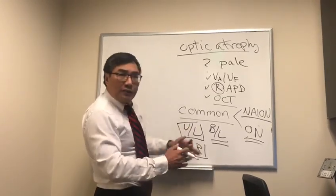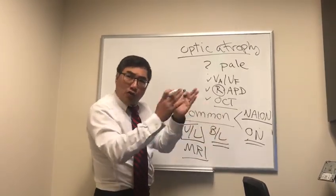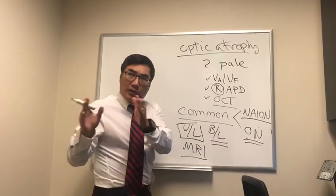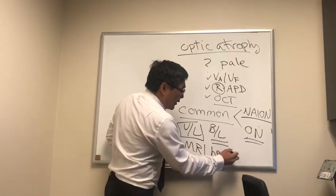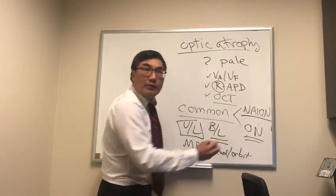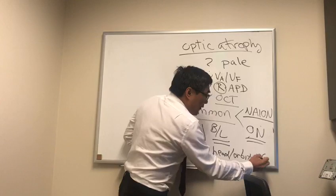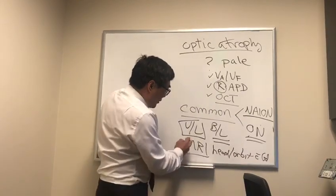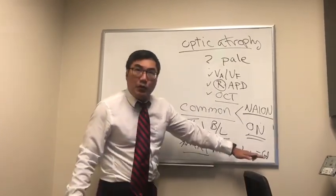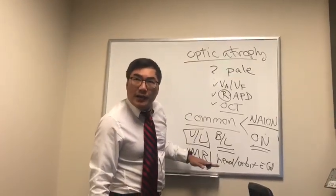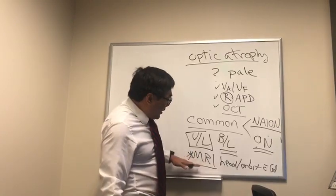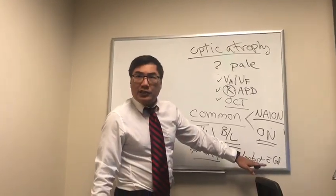Because the optic nerve has an intraocular portion, an intraorbital portion, an intracanalicular portion, and an intracranial portion, we need to have MRI of head and orbit with gadolinium and fat suppression sequences. That is going to provide us a yield of about 20%. About 20% of the people, we're going to be able to find right away that the cause of the optic atrophy is compression from a neoplasm. So this is the go-to test in the initial stage.